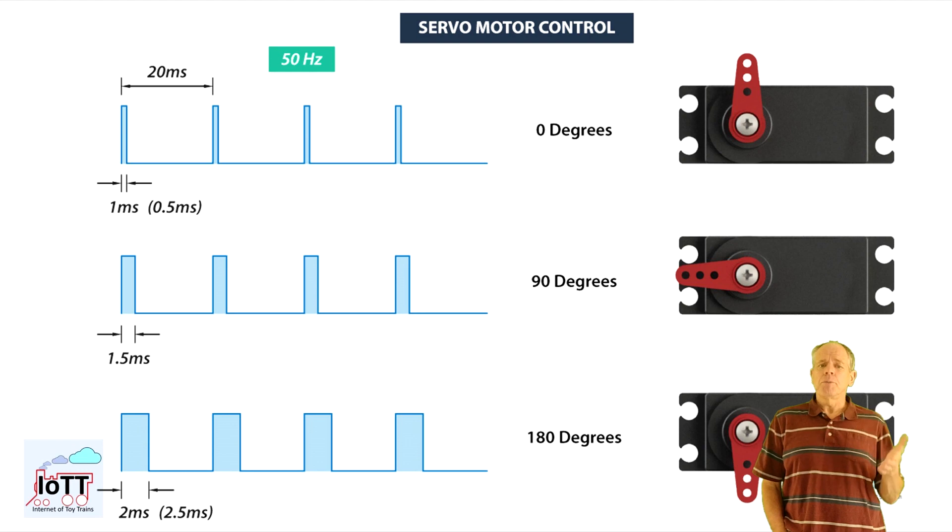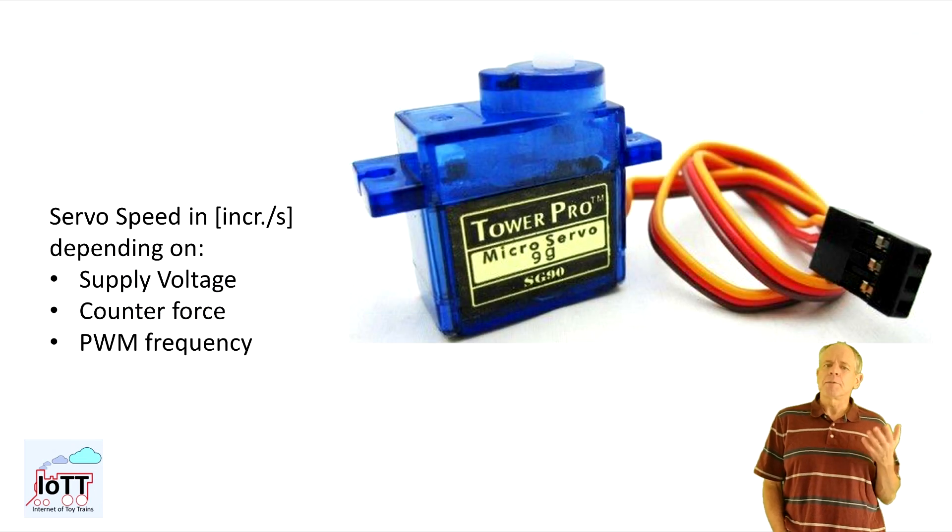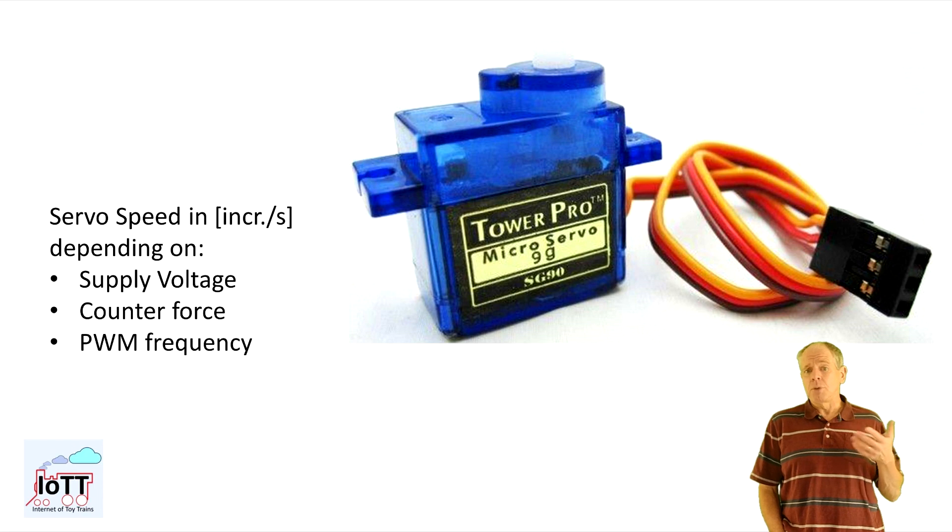Servos are controlled by just setting the position as a value between minimum and maximum. As soon as a new position is set, the servo rushes to that new position as fast as possible. The typical speed is about 1200 positions or increments per second. And it is depending on the supply voltage, the force the servo is moving against, and the PWM frequency of the decoder.